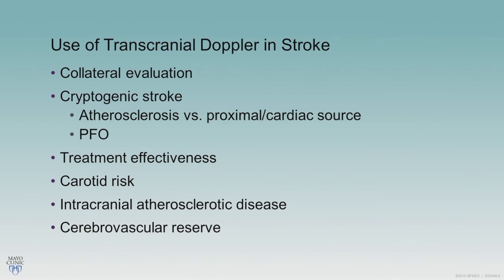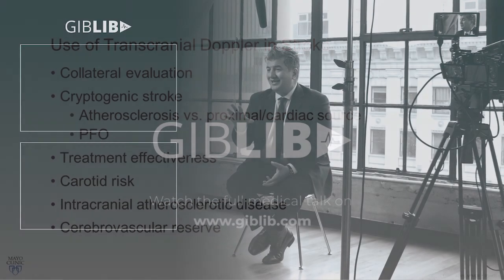The use of transcranial Doppler in stroke is broad. For those with all modalities available, you can use it to evaluate collateral circulation, direction of flow, external-to-internal collateralization, anterior-to-posterior flow, and similar assessments. We can also look at cryptogenic stroke — as Dr. Nasser mentioned — using embolic detection. Multiple embolic signals unilaterally may suggest an atherosclerotic mechanism in the carotid or intracranially.